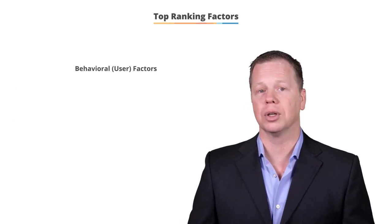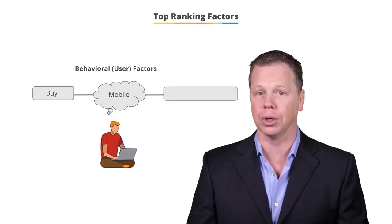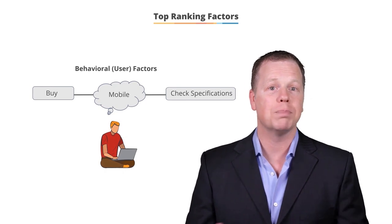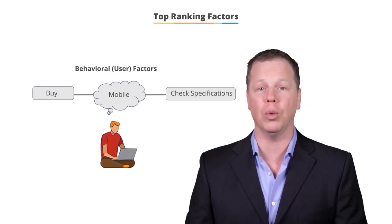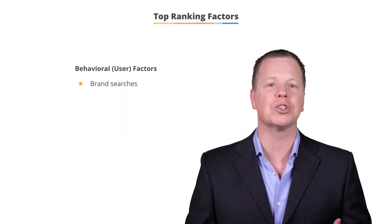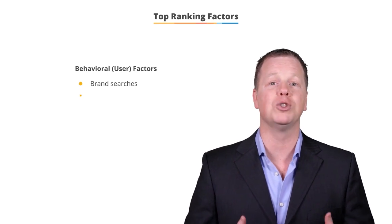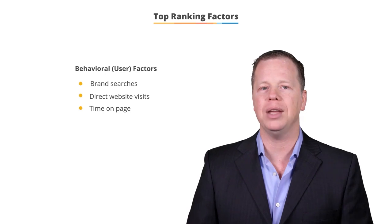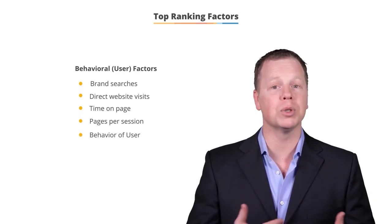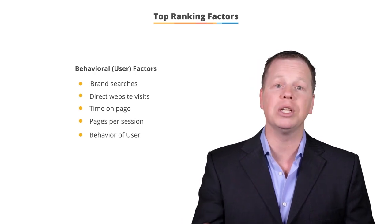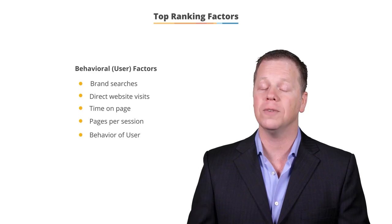Behavioral factors are the newest factors, and with the advent of artificial intelligence, it is making it easier for a search engine to derive a judgment of relevancy based on interaction. While the extent of these signals is not fully known, it is suspected that they are minor but growing in importance. These include the amount of users that search for a brand name or business name and go to that result — showing brand awareness — the amount of direct visits bypassing search, time on page, pages per session (also called the depth of visit), and the behavior of a searcher from the results page: how many results are clicked, how many times they return to the results. This evaluation is looking to judge if the results presented were satisfactory or deficient for that query.